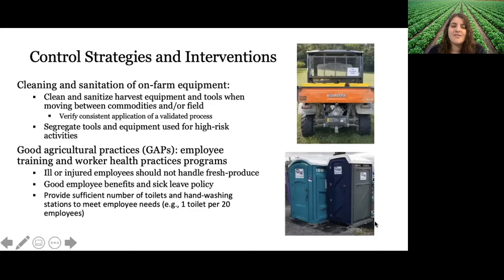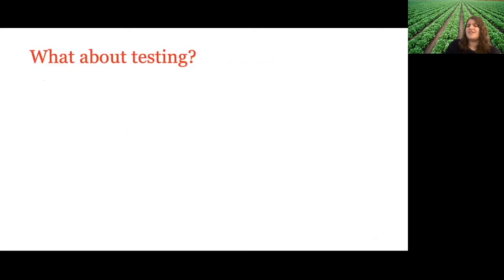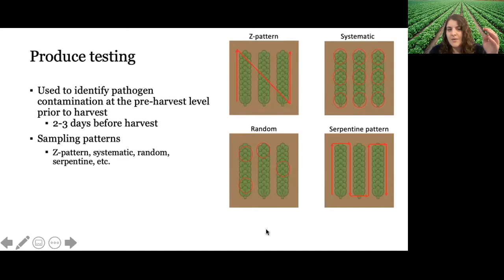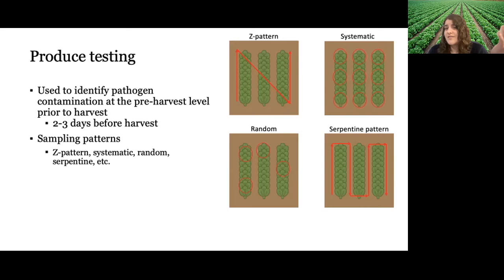What about testing? You might think these control strategies involve a lot of time, effort, and money, so why not just test the product before harvesting? Produce testing in the field is something you can do — usually two to three days before harvest, involving people walking in sampling patterns like a Z pattern, collecting around 60 leaves, combining them into one composite sample, and testing for pathogens. But if you don't find pathogens, does that mean your product is safe? The answer is: not really.